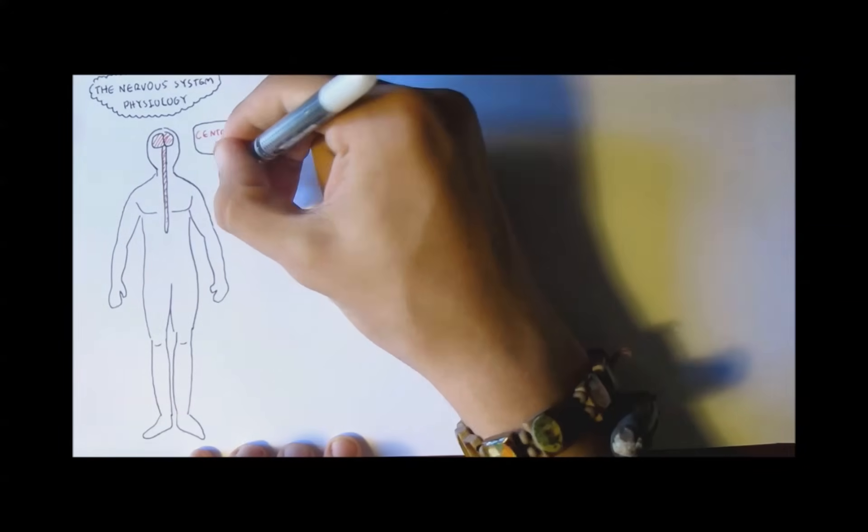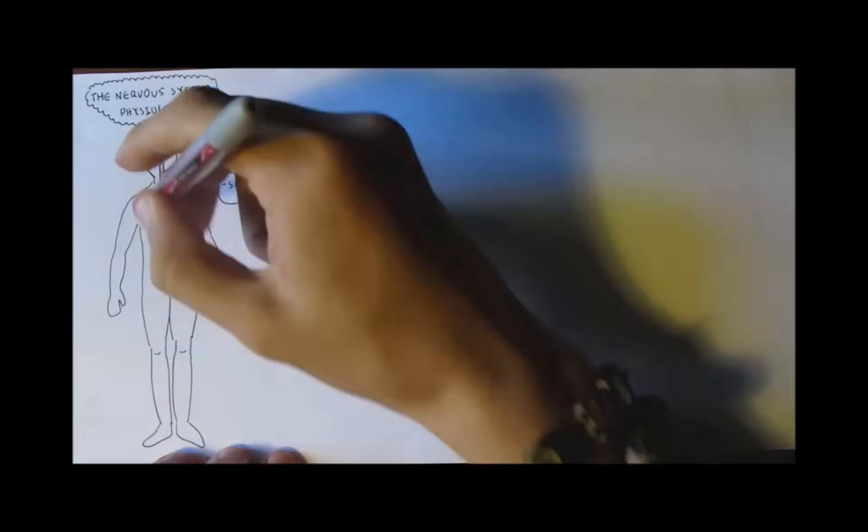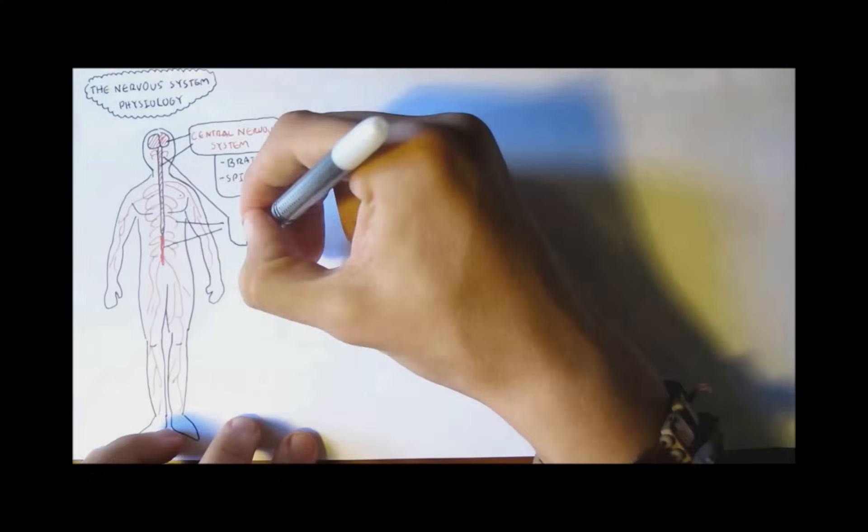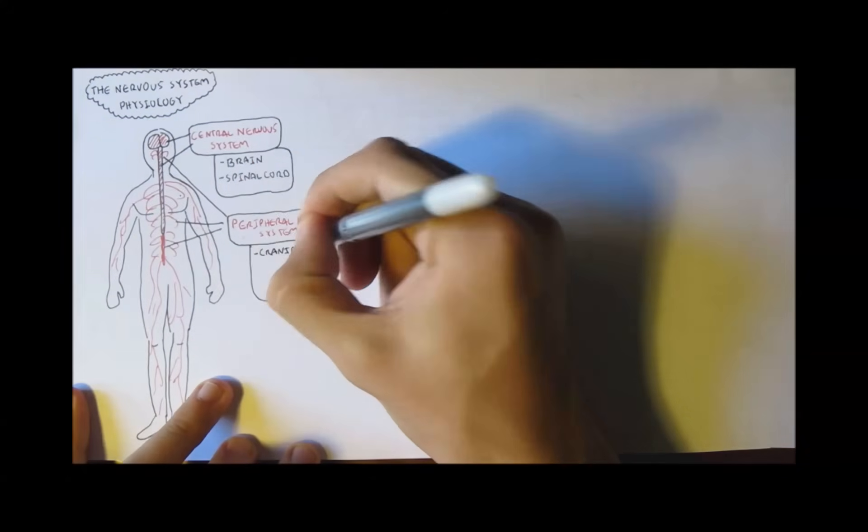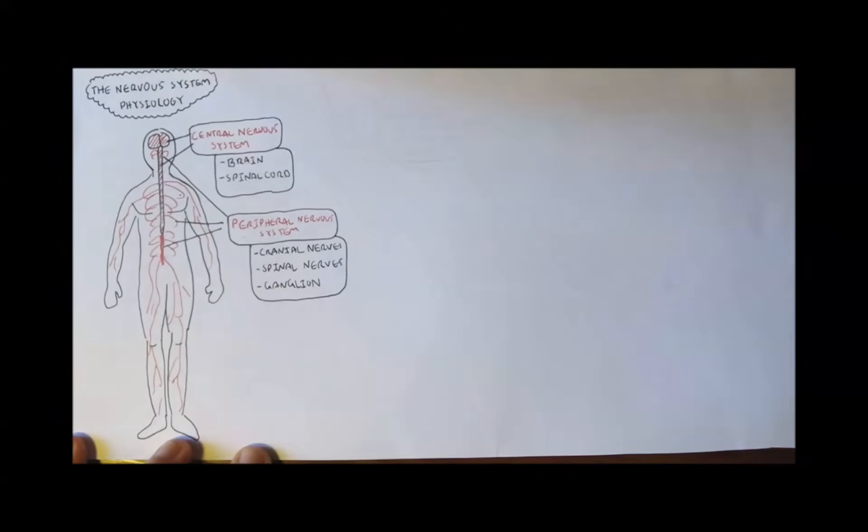the central nervous system which includes the brain and the spinal cord and also the peripheral nervous system which includes the cranial nerves, spinal nerves and also the ganglion.